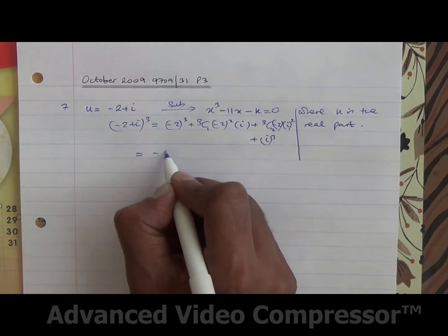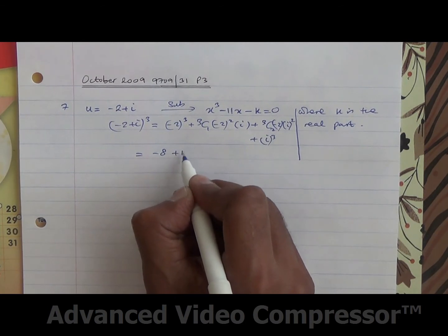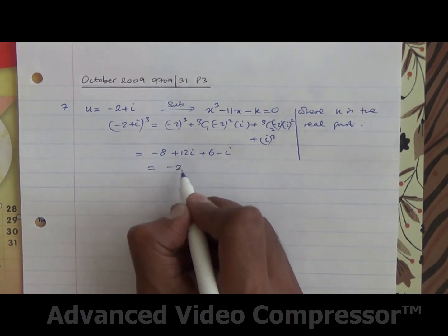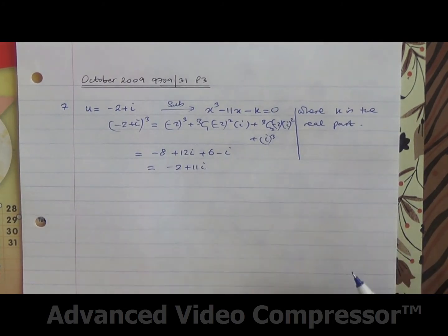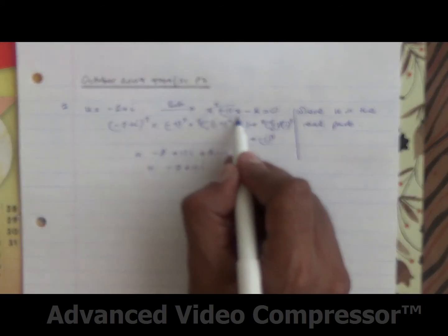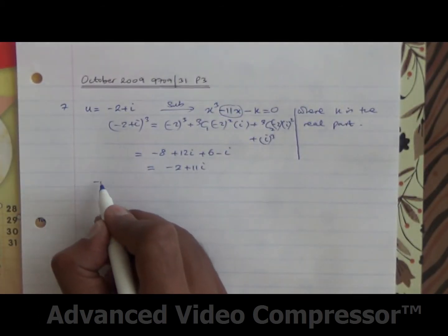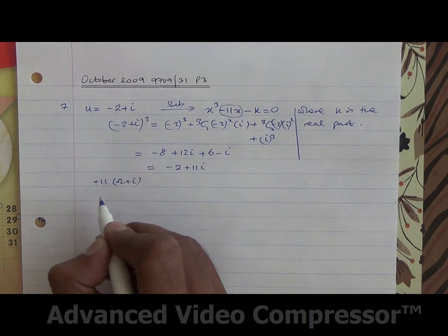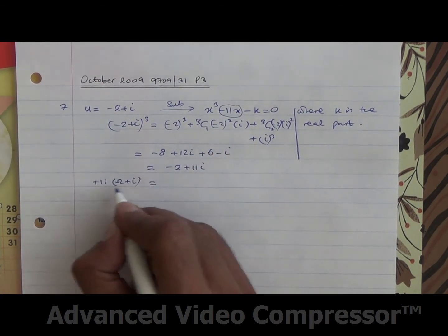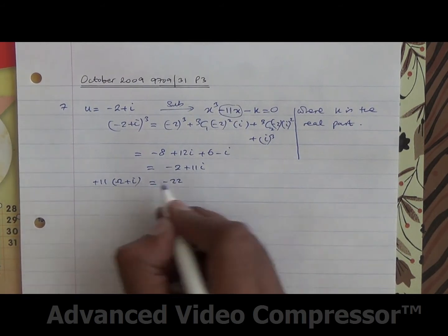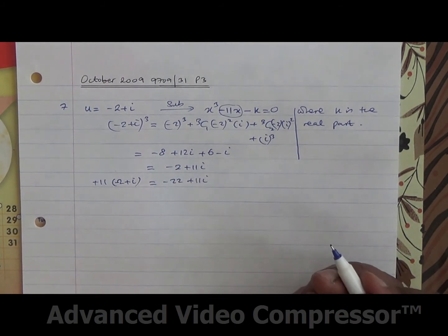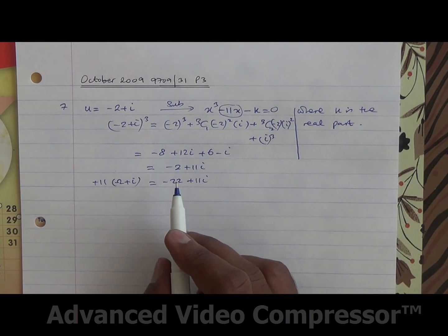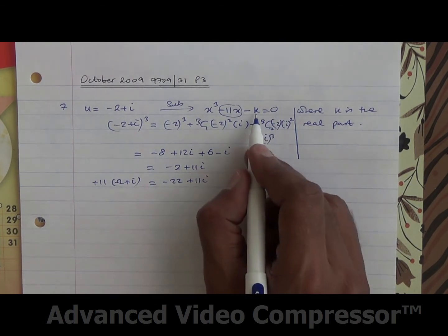Expanding all of that, we're going to get minus 8, plus 12i plus 6 minus i. If you carry on, you're going to see it boils down to minus 2 plus 11i. Now, for this part here, minus 11x, that's minus 11 times minus 2 plus i. So 11 times minus 2 is minus 22, 11 times i is plus 11i, and then we have minus k.